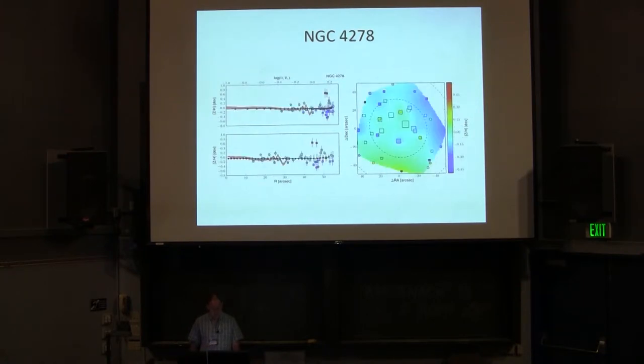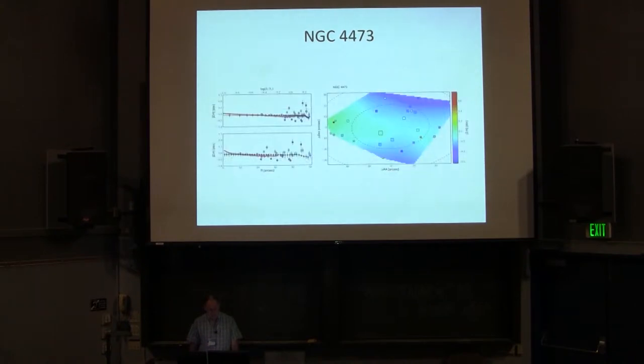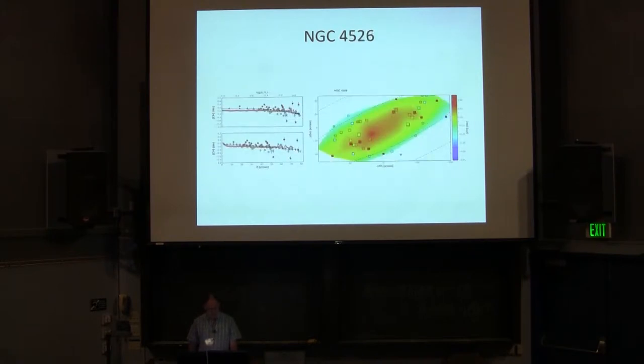Here's another galaxy with a relatively flat gradient in this case. Another galaxy with a flat gradient, again sparsely sampled. Another example of an elongated galaxy so we've got lots of data points on the elongation, again not particularly in the center.